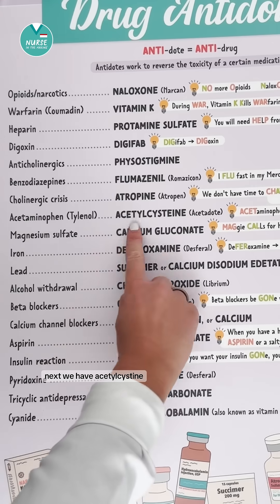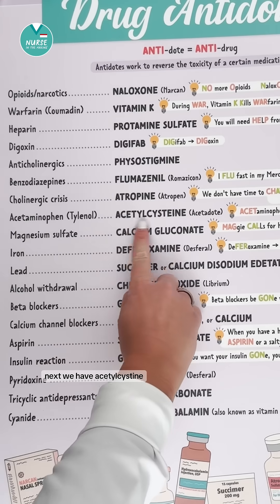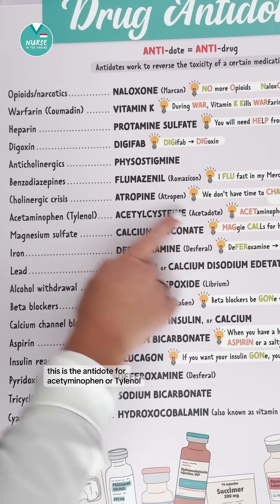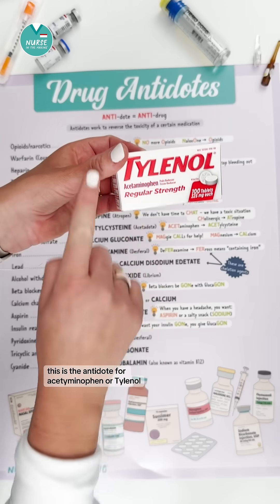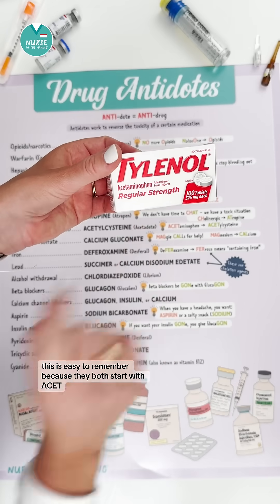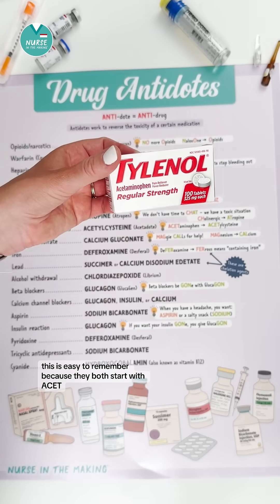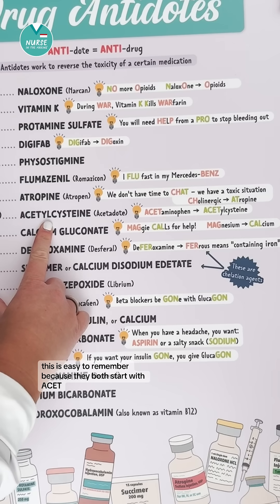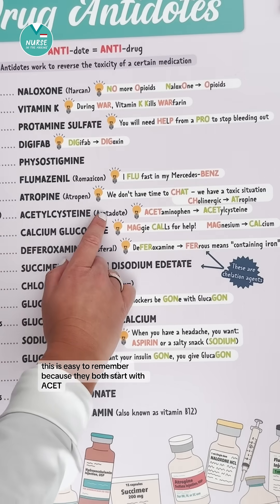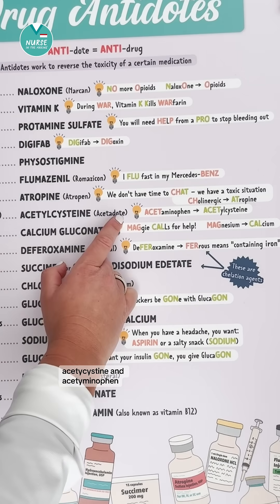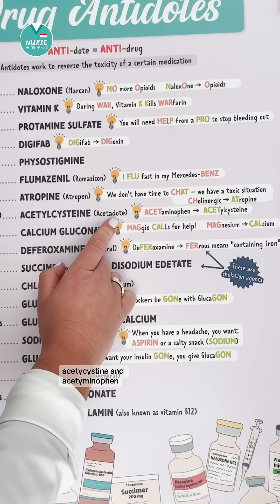Next we have acetylcysteine. This is the antidote for acetaminophen or Tylenol. This is easy to remember because they both start with A-C-E-T — acetylcysteine and acetaminophen.